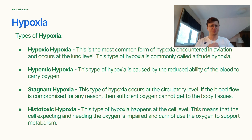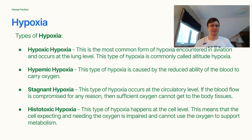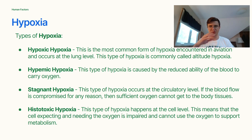There are four types of hypoxia. Hypoxic hypoxia is the most common form, occurring at very high altitude. Hypemic hypoxia is caused when the blood is unable to carry oxygen. Stagnant hypoxia happens at the circulatory level — if blood flow is compromised, sufficient oxygen cannot reach the body tissues. Histotoxic hypoxia happens at the cell level, where the cell is impaired and cannot use oxygen to support metabolism. I'll leave a link below to an FAA guide on hypoxia for more detail.